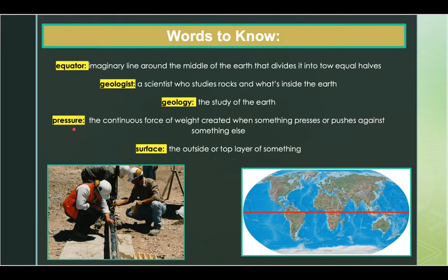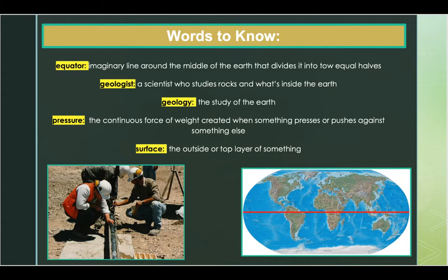Our next word is pressure — the continuous force of weight created when something presses or pushes against something else. An example: The nutcracker helped the girl create enough pressure to crack the walnut open. Our next word is surface — the outside or top layer of something. An example: She wiped the surface of the table with a wet cloth after dinner.